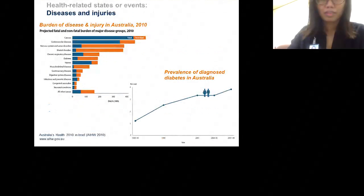Both cause of death data and hospital data are cause-coded. In Australia and most other countries, it's broadly speaking the same classification system used to classify causes of death and causes of hospitalised cases. In both instances, it's versions of a thing called the International Classification of Diseases, which I'll talk more about shortly.